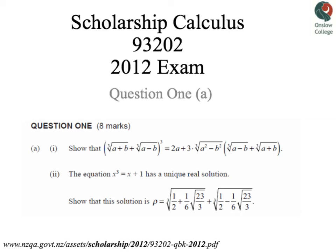Okay, so this is the first half of Question 1, so this is actually worth 4 marks, not 8 marks. And it starts with a show that question, which is kind of like a warm-up. So you can try that one, and then the next part is looking at a cubic equation. So the equation x cubed is equal to x plus 1 has a unique real solution.